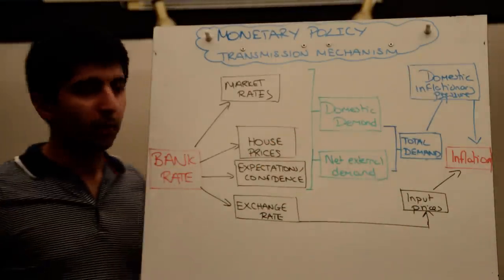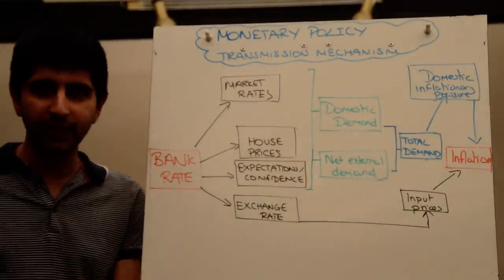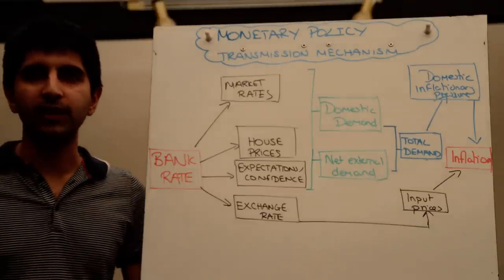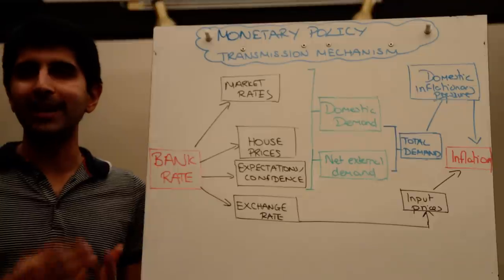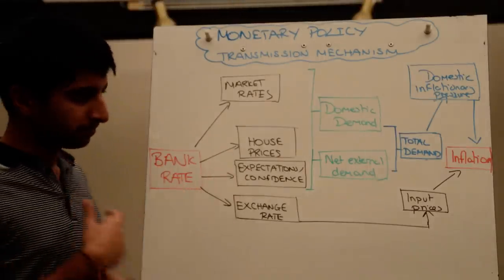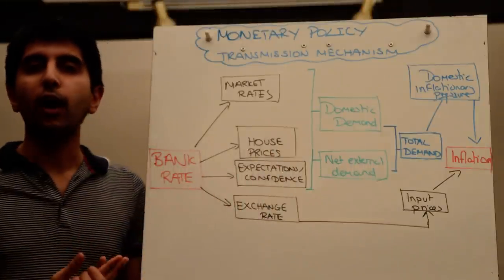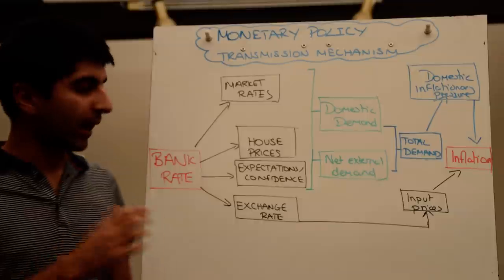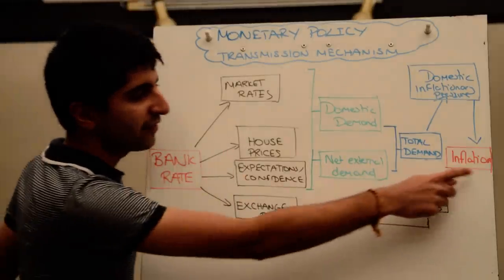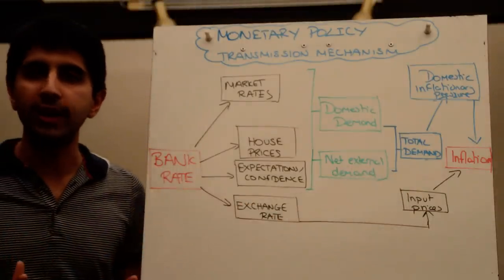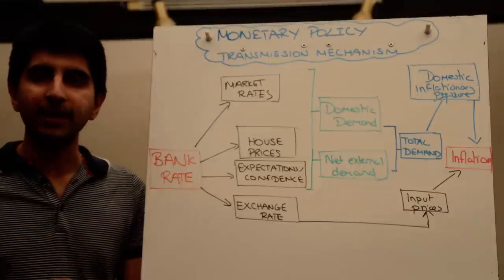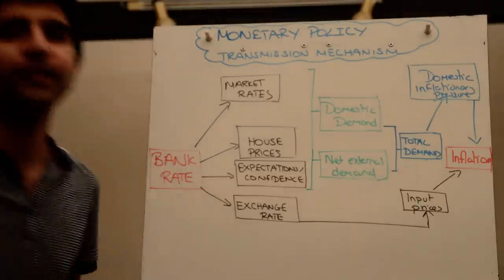That's how the monetary policy transmission mechanism works. When writing an essay, don't just say the effect of reducing interest rates depends on the timeline involved and then stop there. Talk about how there are many different channels of the transmission mechanism and how a change in interest rates needs to work through each channel individually before we can see a final impact on inflation, growth, or whatever in the economy. Talk about the monetary policy transmission mechanism in detail when you make that point and you're going to score very highly. Thanks for watching — see you all next time.